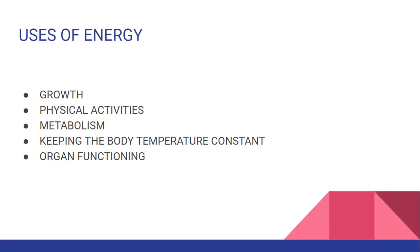So from where is the energy coming? ATP is broken down into ADP, giving you energy. Metabolism — chemical reactions taking place in our cells — needs energy. Keeping the body temperature constant also requires energy. Our body temperature under normal circumstances is always constant, unless you have a fever. You need energy to keep your body temperature constant, and that energy will be supplied from the ATP. Organ functioning — your lungs, heart, kidneys, and blood circulation — all need energy.